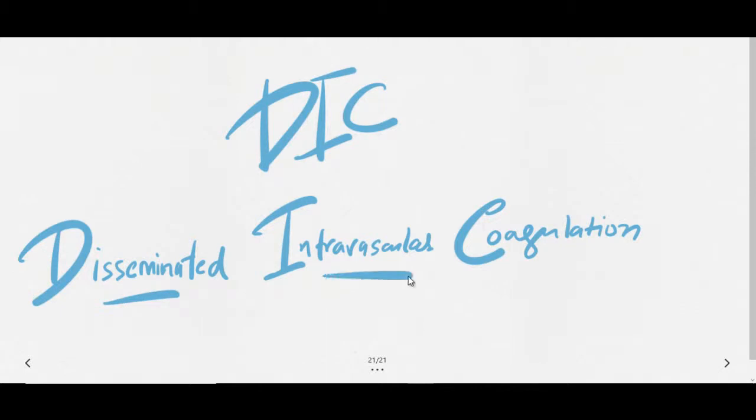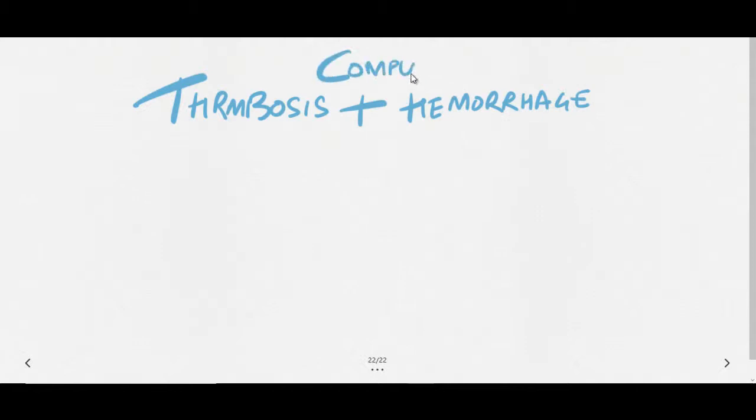Let us start with today's session. DIC or disseminated intravascular coagulation is actually a very complex disease. Why? Because in that you will see thrombosis as well as hemorrhages, both. This is the only condition in which you can see this combination, and that's why we call it a very complex disease.